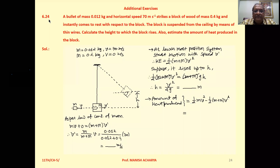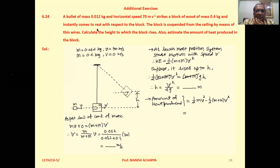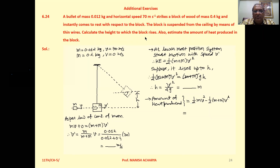Additional exercise 6.24. A bullet of mass 0.012 kilogram and horizontal speed 70 meter per second strikes a block of wood of mass 0.4 kilogram and instantly comes to rest with respect to the block. The block is suspended from the ceiling by means of a thin wire. Calculate the height to which the block rises. Also, estimate the amount of heat produced in the block.